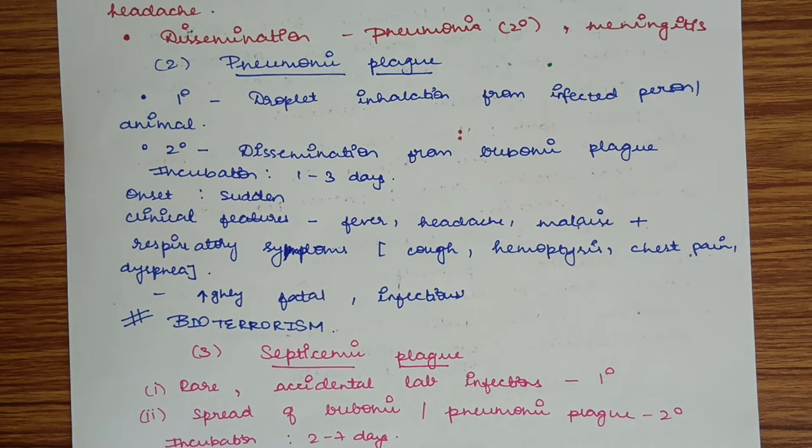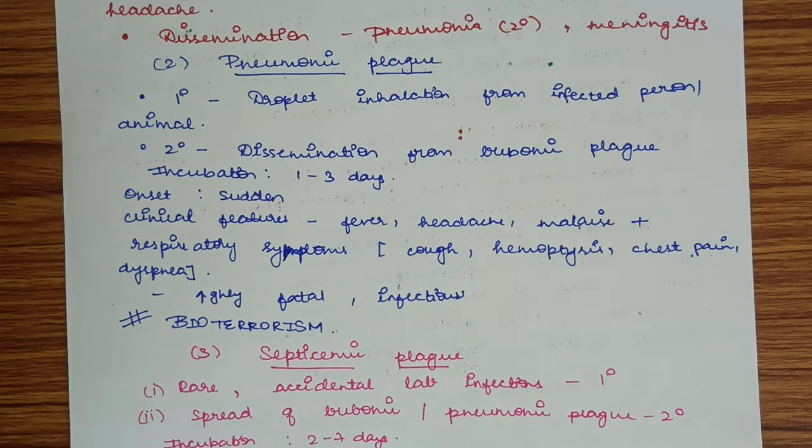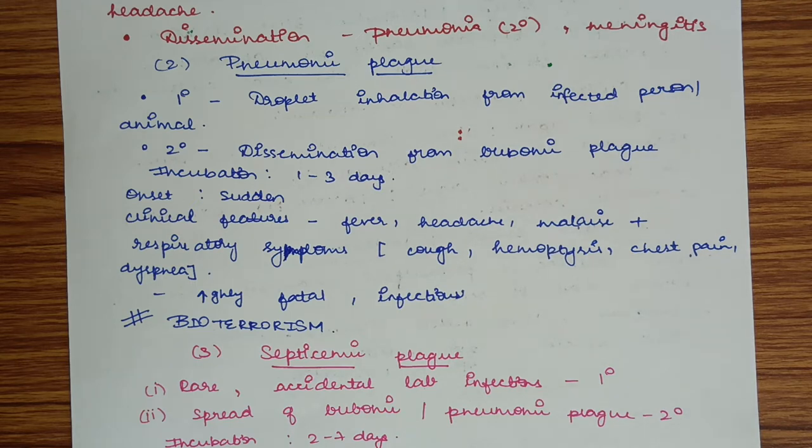Clinical features are similar to bubonic plague—fever, malaise, headache—plus respiratory symptoms such as cough, chest pain, dyspnea, and hemoptysis, which is cough with sputum containing blood. It is more fatal, infectious, and an agent of bioterrorism.